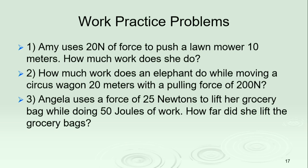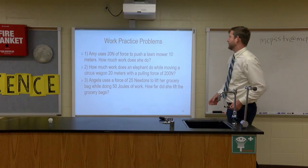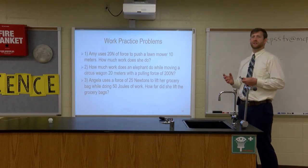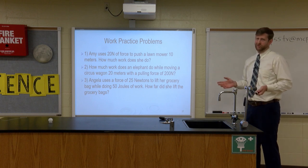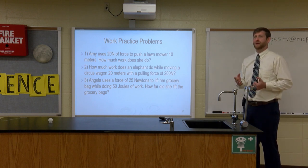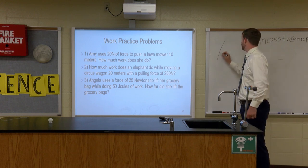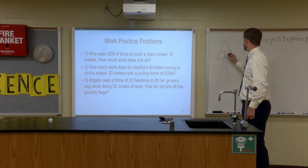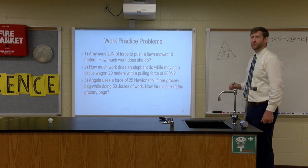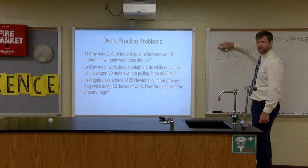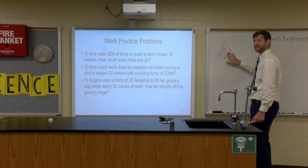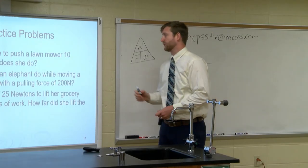Last week we did practice problem number one: Amy uses 20 newtons of force to push a lawnmower 10 meters — how much work did she do? We used our formula, work equals force times distance, and found she did 200 joules of work. Here's a shortcut: if you want to find work, cover up W — force times distance. To find distance, it's work divided by force. Same thing to find force.